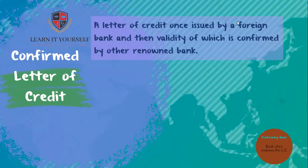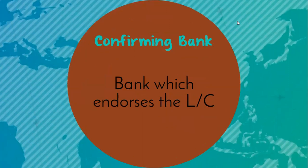A confirmed letter of credit is a type of letter of credit issued by a foreign bank whose validity is endorsed by another renowned bank. An exporter whose payment terms are a confirmed letter of credit is assured by a recognised bank with better credit worthiness than the advising bank. The bank that endorses or guarantees the issued letter of credit is called the confirming bank.